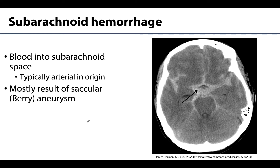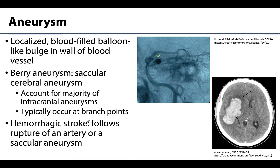An aneurysm can occur in any artery of the body, but it certainly can occur with arteries associated with the brain. The walls of an artery weaken and allow blood to collect in balloon-like bulges in the vessel walls. Specifically for the brain, the most common type are berry aneurysms — an eponym — which are saccular, meaning they have a characteristic round shape. These typically occur at branching points where an artery gives off a branch, and if one ruptures this can lead to a hemorrhagic stroke.